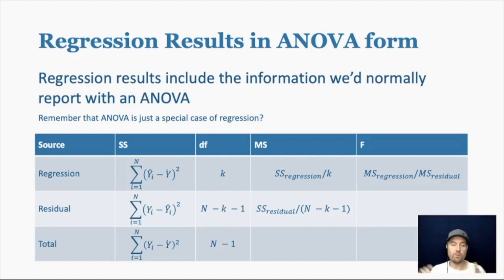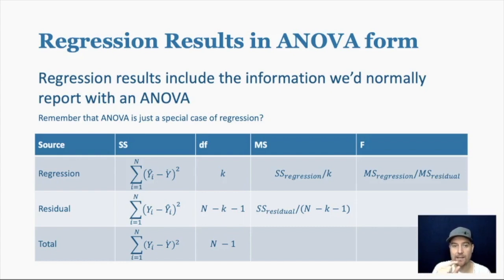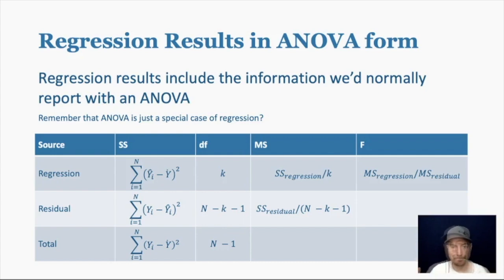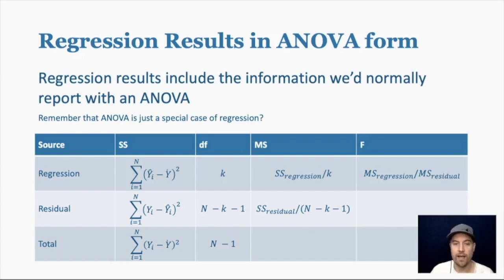The regression line shows us what we can explain. It's the difference between our predicted value and Y-bar — so it's Y-hat minus Y-bar, the difference between what we predict for each person minus the overall mean, squared and summed up. That's the sum of squares regression. The sum of squares residual is the difference between the observed and predicted values, squared and summed. That gives us an F statistic, which tells us if our predictors overall are able to significantly explain the outcome.